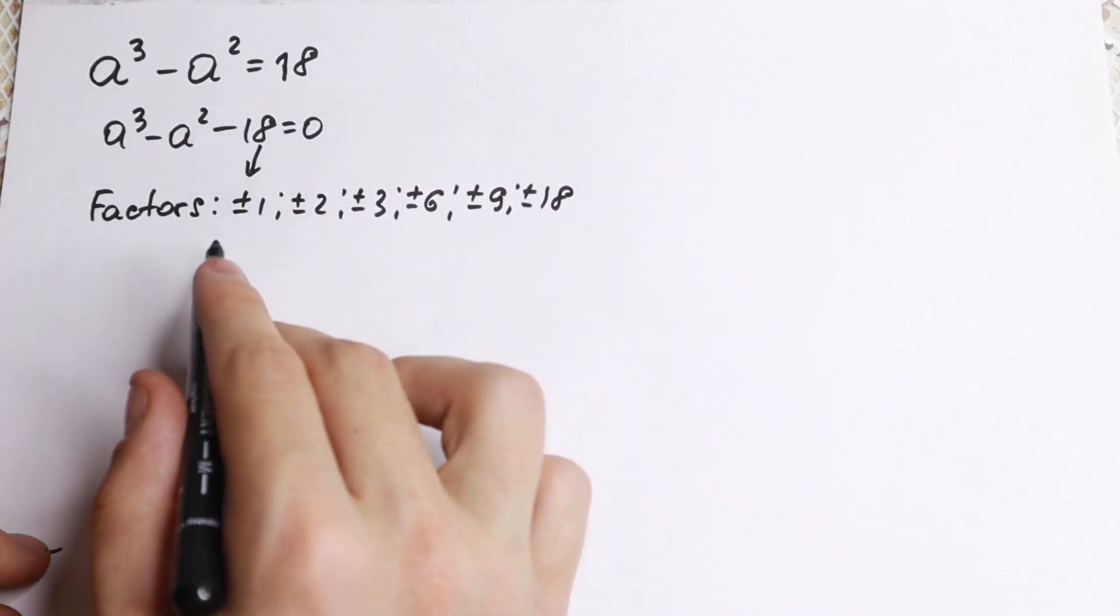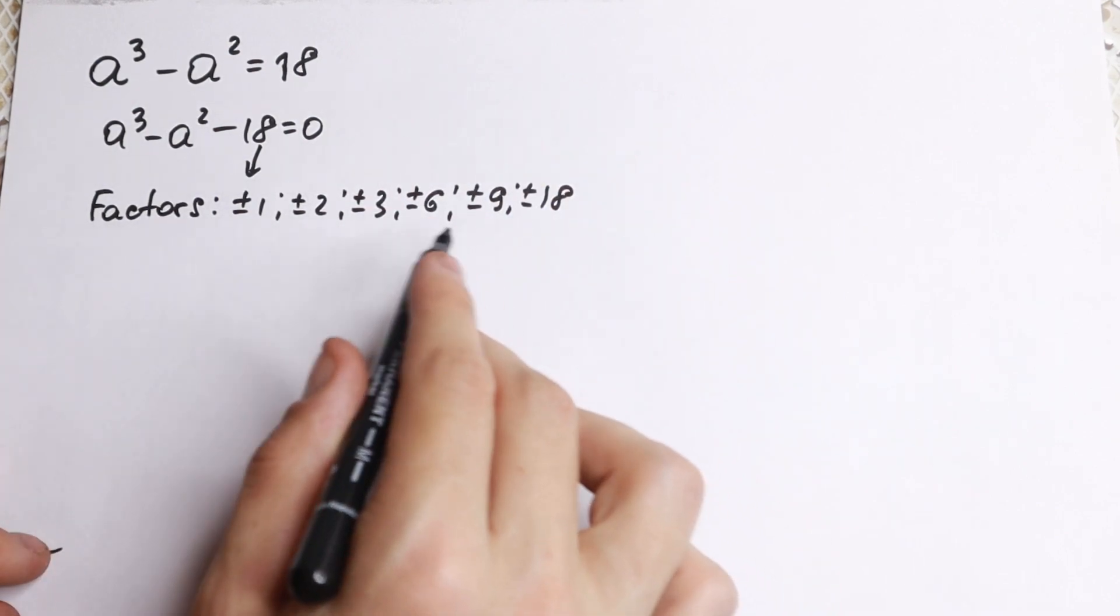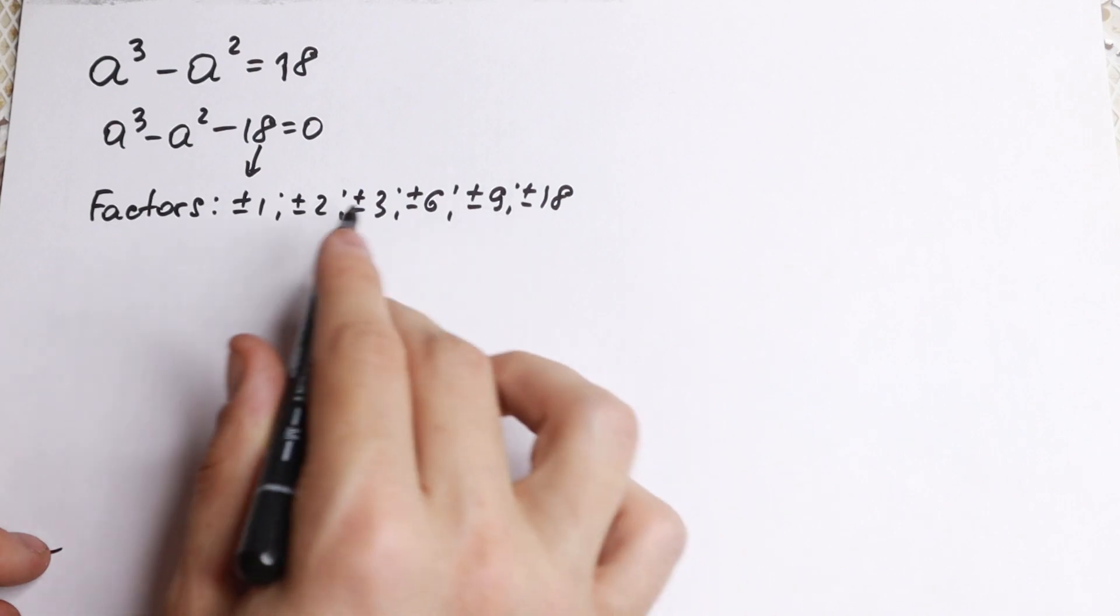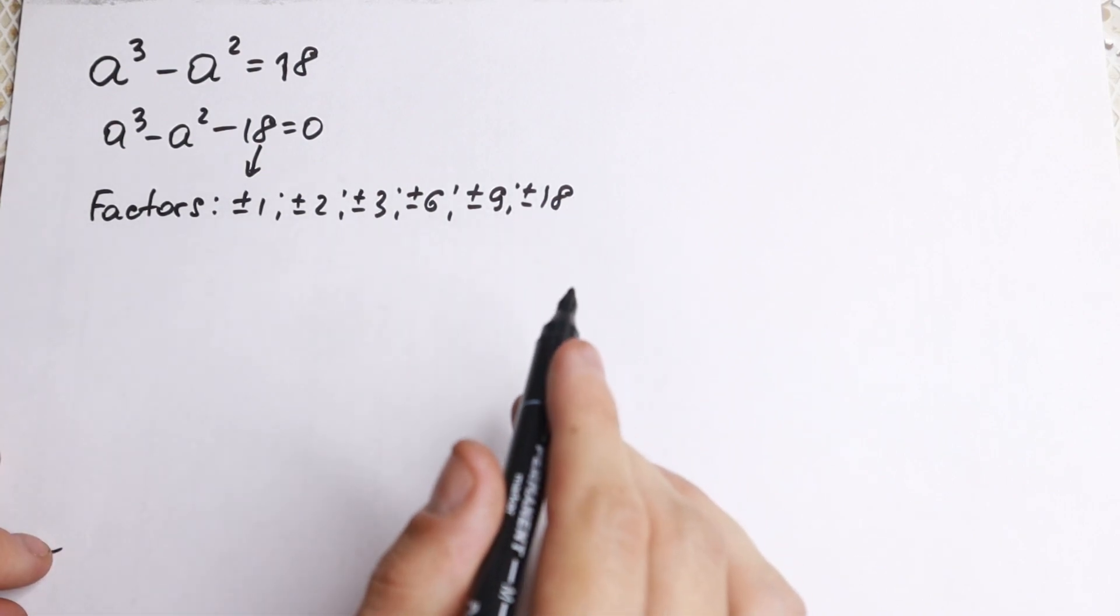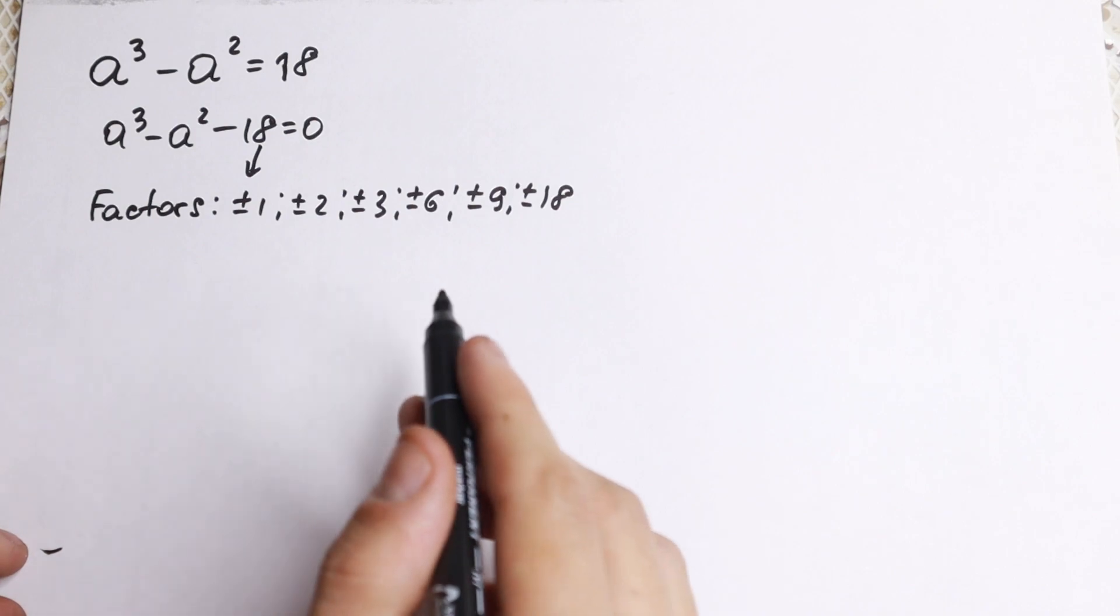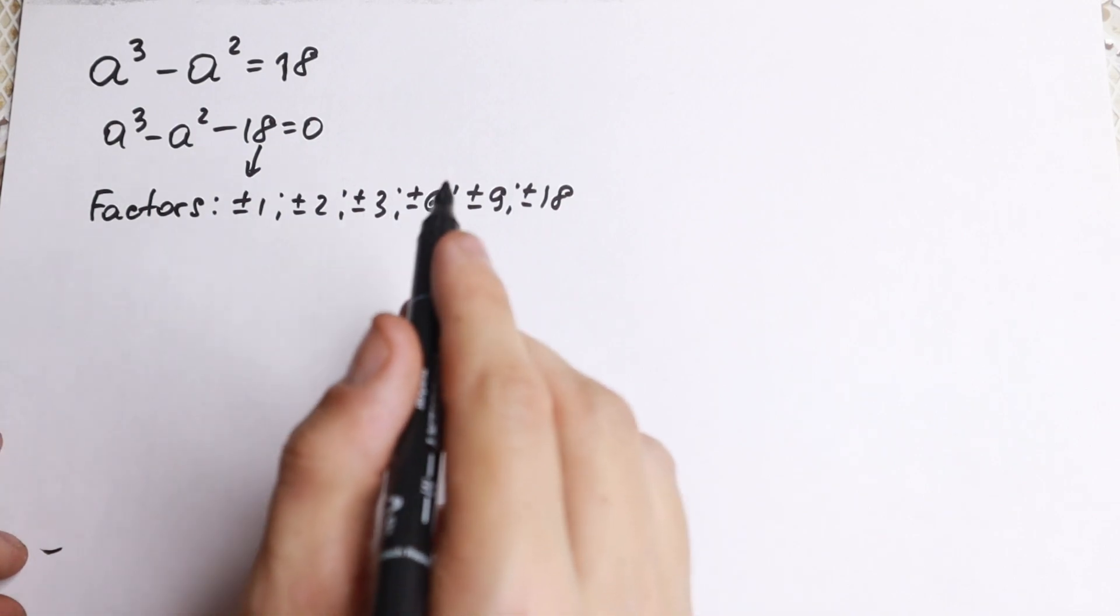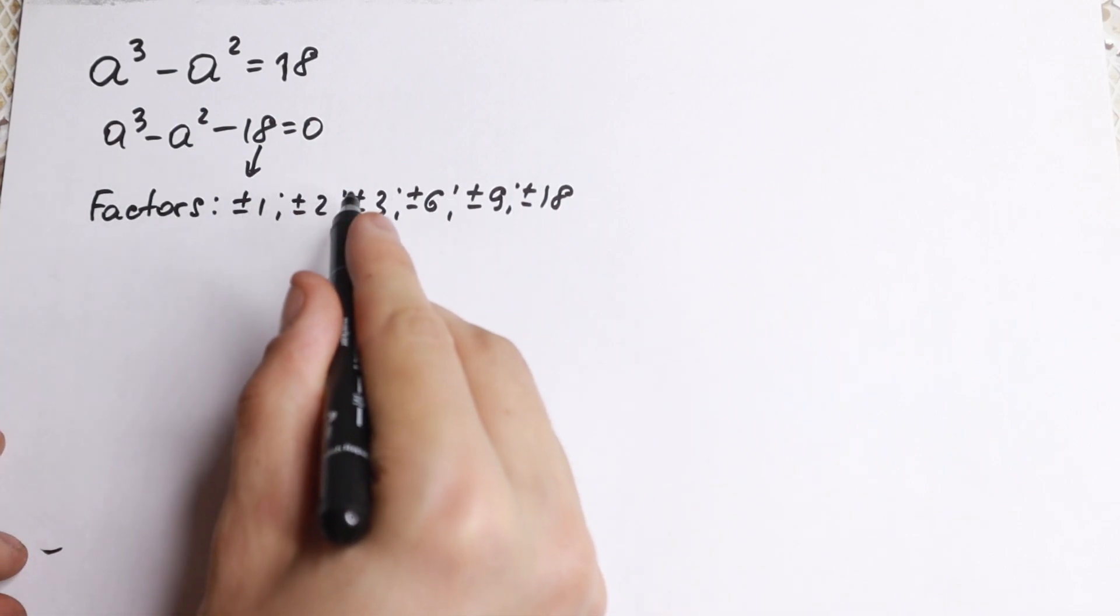On the first side we need to check all these factors. We have a lot of factors—we have 12 factors total—and if we check them all, it will not be a quick solution. But I want to show you how we can solve it. Let's check only positive 1.